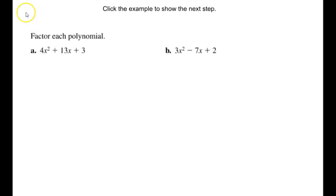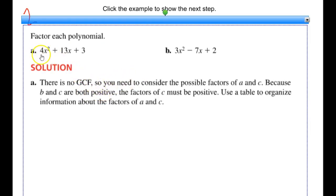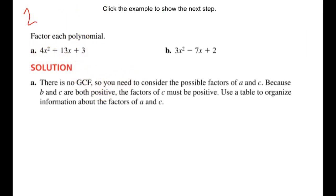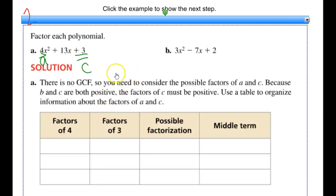Now we're looking at example number 2, part a. First, I check if there's anything I can factor out of each term — in this trinomial there's not, since not all numbers are divisible by the same thing. So I have to consider all possible factors of a and c. Remember, a is always the coefficient of x squared and c is always the constant term. I need to use a table to organize the data. When dealing with these kinds of polynomials, there's no shortcut — it's a lot of guess and check.